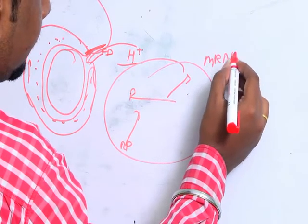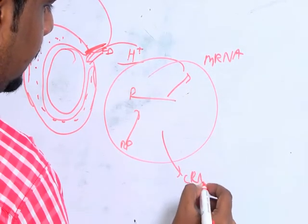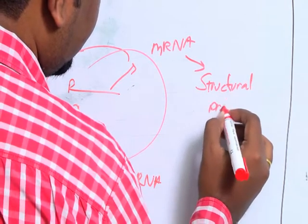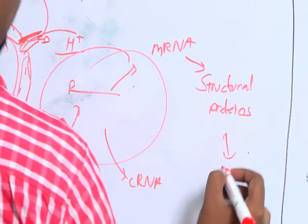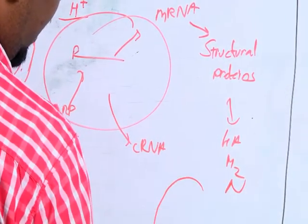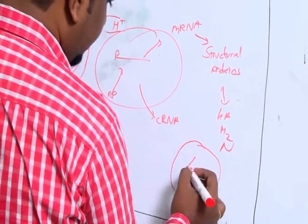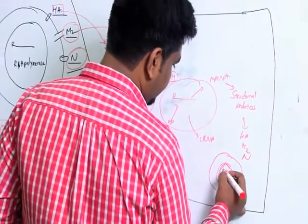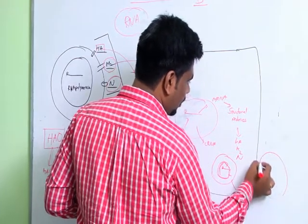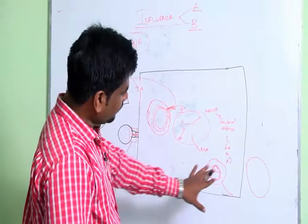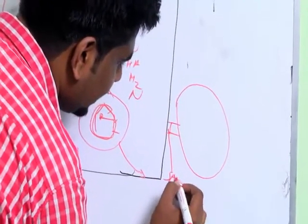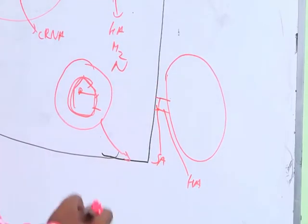The RNA polymerase then leads to formation of mRNA and complementary RNA. This mRNA leads to synthesis of structural proteins such as hemagglutinin, M2 ion channels, and neuraminidase. Everything is then packaged and assembled into a capsid, and the new virion exits the host cell.